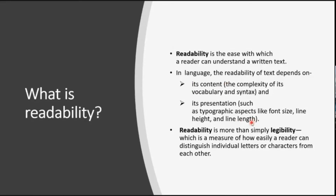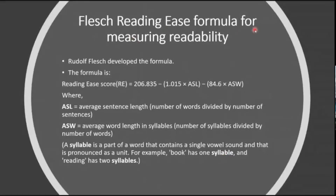There are some formulas through which we can find out the readability. The most popular one is the Flesch Reading Ease formula for measuring readability, developed by Rudolf Flesch based on his PhD thesis. The formula uses ASL — average sentence length — and average syllables per word. When there are fewer syllables, it is easier to understand. A syllable is a part of a word that contains a single vowel sound. For example, 'read' is one syllable and 'reading' is two syllables. As the number of syllables per word increases, readability decreases.